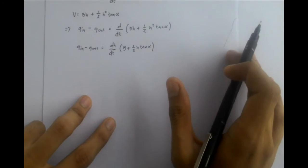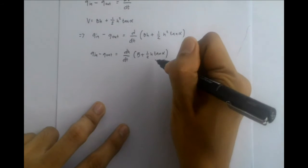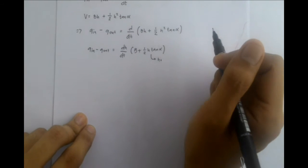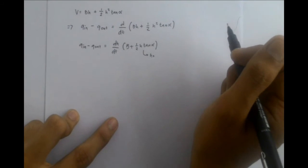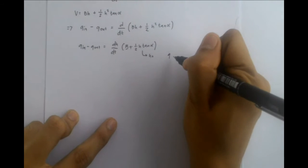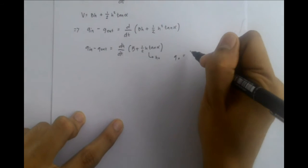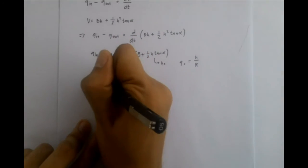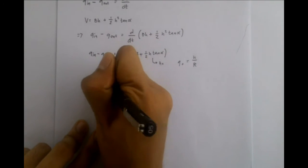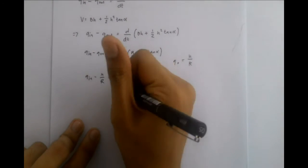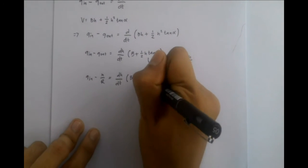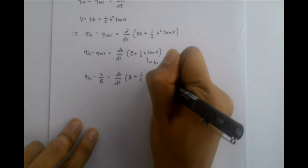Take note also the relationship of the exit mass flow rate to the level H and resistance R, which turns out to be Q_out equals H over R. Now, the mass balance will become Q_in minus H over R equals dH/dt times B plus one-half H sub-zero tangent alpha.